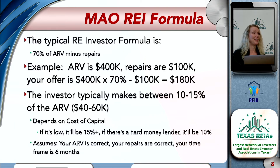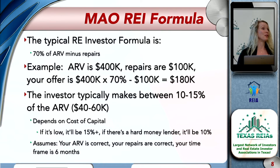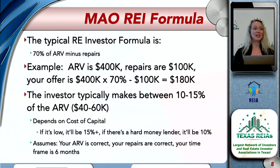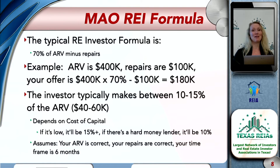Make sure your ARV is correct, and beware of trusted advice from a bad source — a realtor isn't always your best advocate. The formula also assumes your repairs are correct. My least favorite quote in real estate investing: 'My renovation project came in on time and on budget' — said no one ever. The 10 to 15% profit also assumes a timeframe of about six months.